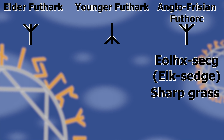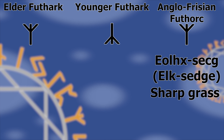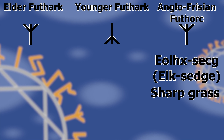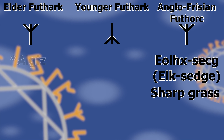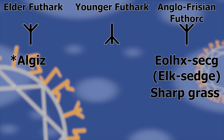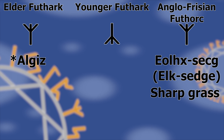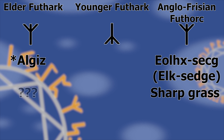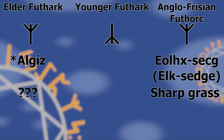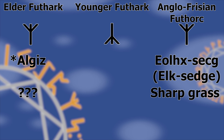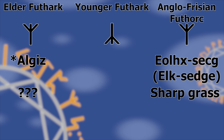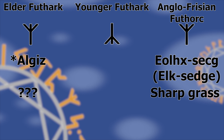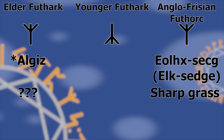From this, the rune's Elder Futhark name has been reconstructed as Algis. This is nothing short of a guess — we don't remotely know what its name may have been.